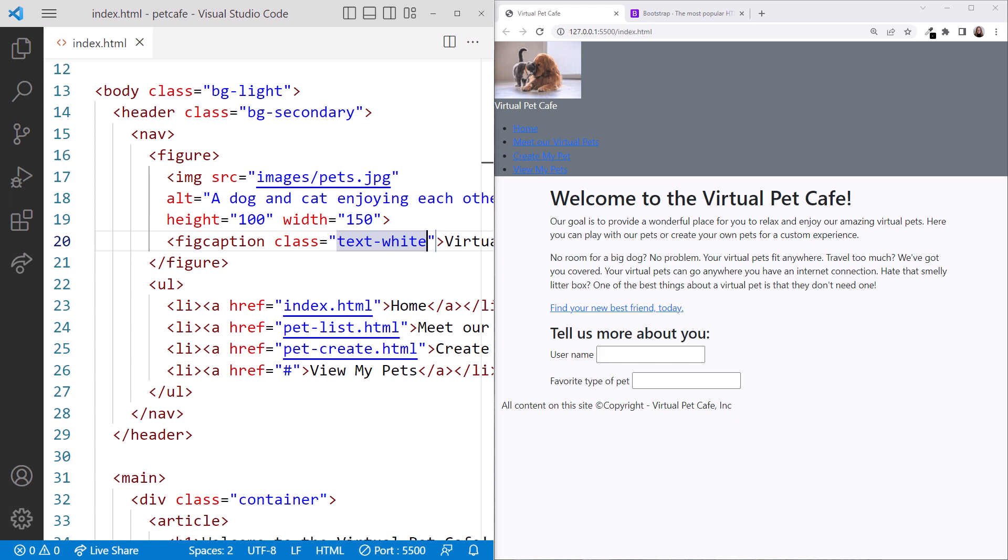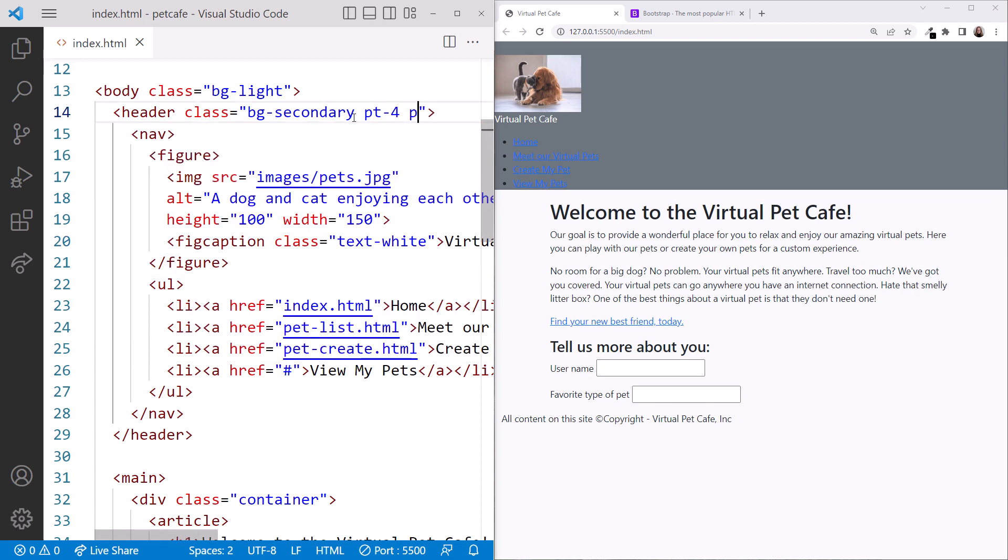Next, let's add a little separation around the header using padding. On the header element, set the padding top to 4 and the padding start to 4. That adds padding on the top and left.